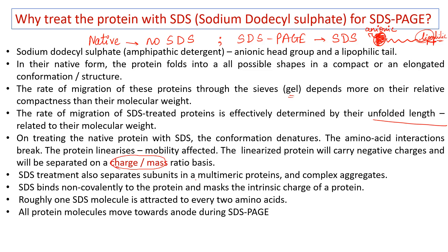SDS treatment also separates subunits in a multimeric protein and complex aggregates. SDS binds non-covalently to the protein and masks the intrinsic charge, uniformly imparting negative charges. Roughly, one SDS molecule is attracted to every two amino acids. All protein molecules will move towards the anode during SDS PAGE.